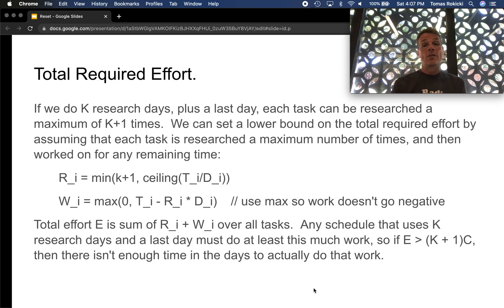Then after that research is done, we're left with a certain amount of additional work. It might be zero for each task and we call that W_i. And we can calculate that by subtracting from T_i the number of days we do research times the amount each task decreases by one day of research. We have to maximize that at zero because it's possible things don't divide evenly and we may go negative. So that's what the max is in there for. So the total effort we call E is the sum of R_i and W_i for all these tasks. Remember each research unit takes one second of time. Any schedule that uses k research days plus the last day must do at least this much work. There is no way by doing less research or scheduling things differently that you can decrease the duration of work that's required overall. So if the total effort E is greater than (k+1)*C which is the total effort available, then there isn't enough time in the days to actually do the work.